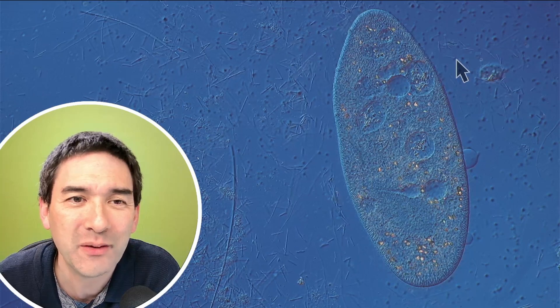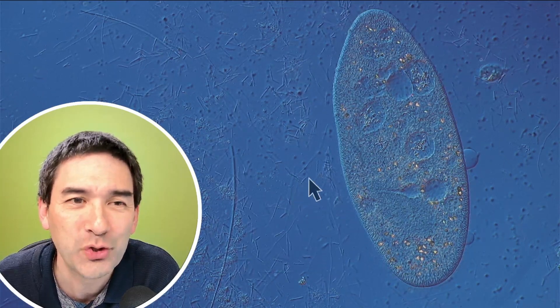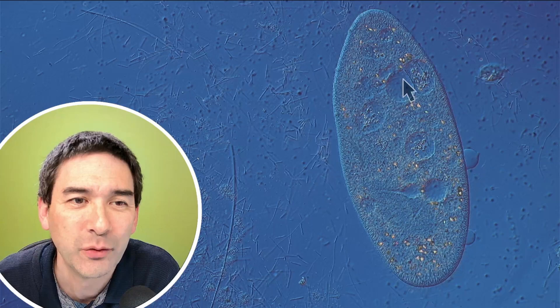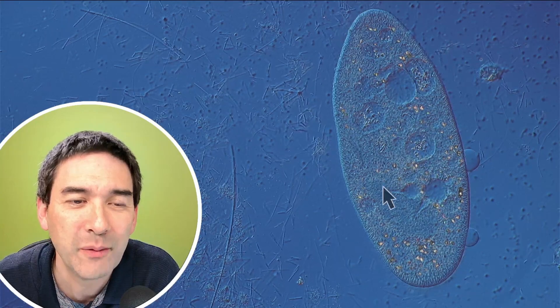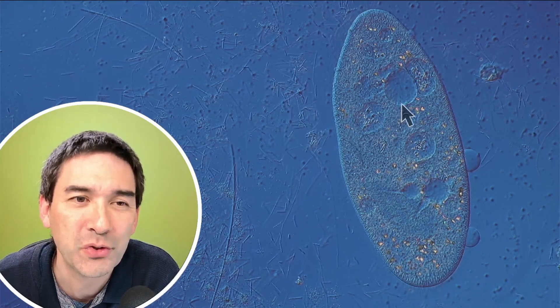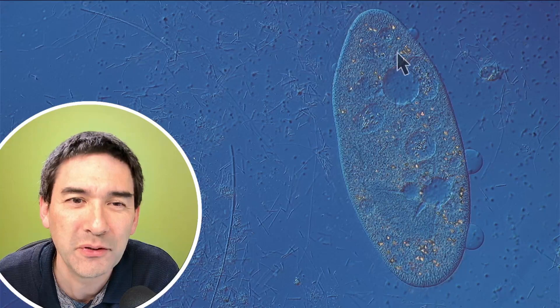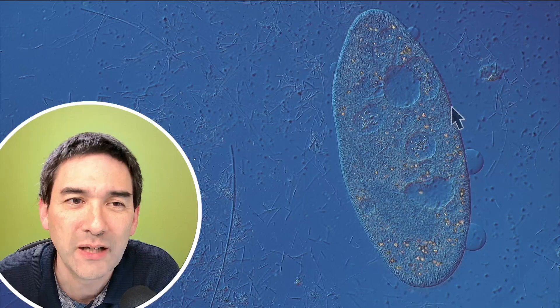We're now looking at the cell with the 40 times magnifying objective. You have plenty of cell organelles visible in here. We can see a lot of bacteria also on the outside here. Those rod-shaped structures are all bacteria. Let's have a look at this one over here. These are vacuoles that contain either food, and some of them might also be—there should be also two contractile vacuoles visible, which are pumping out water.